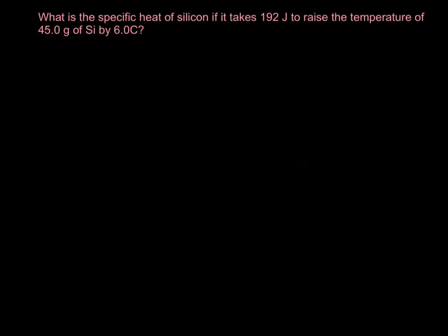What's the specific heat or specific heat capacity of silicon if it takes 192 joules to raise the temperature of 45 grams of silicon by six degrees? The way the equation is really usually written is q = mc∆T, but in this case let's go ahead and solve for c. So that's going to be q over m∆T.